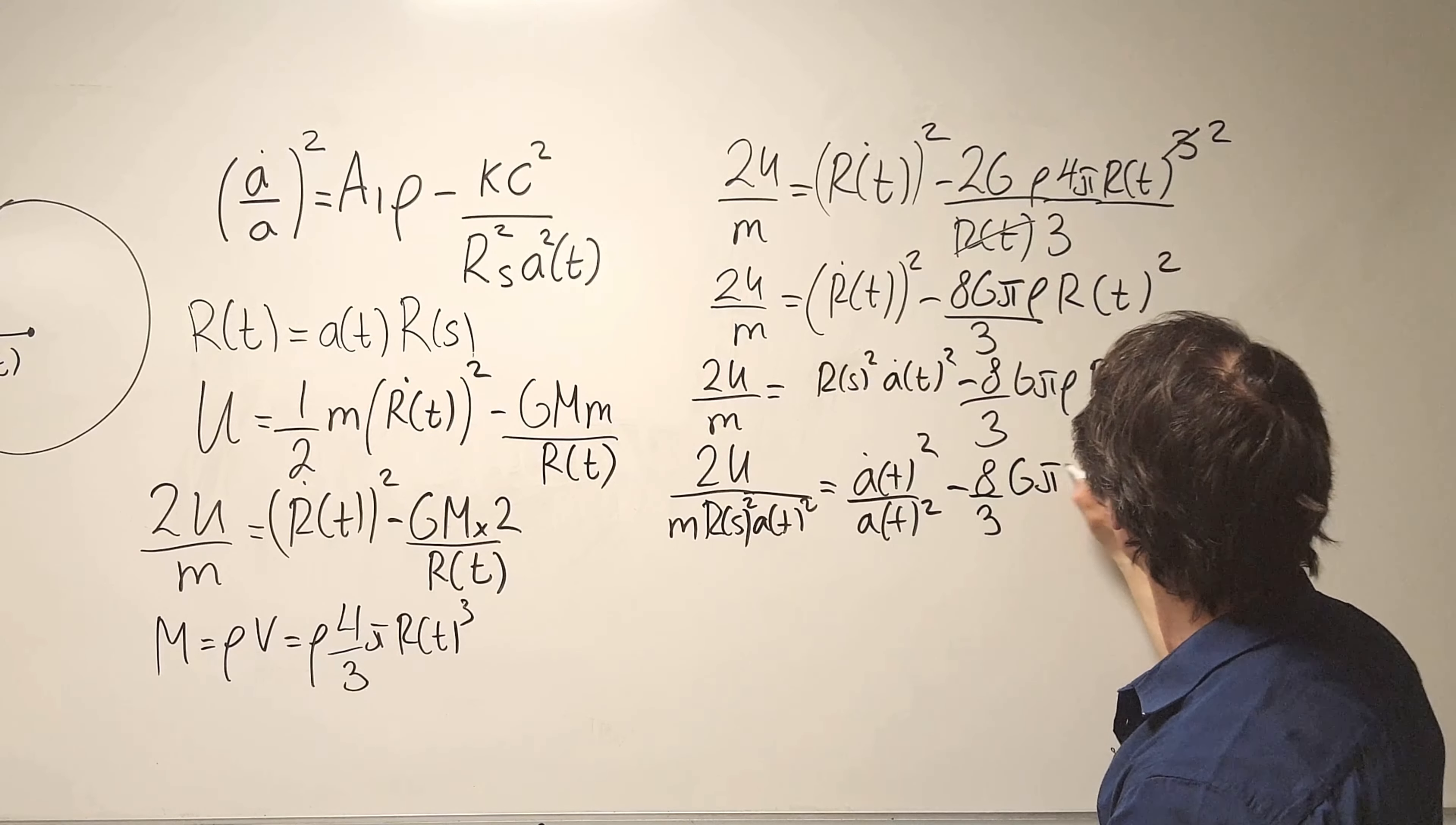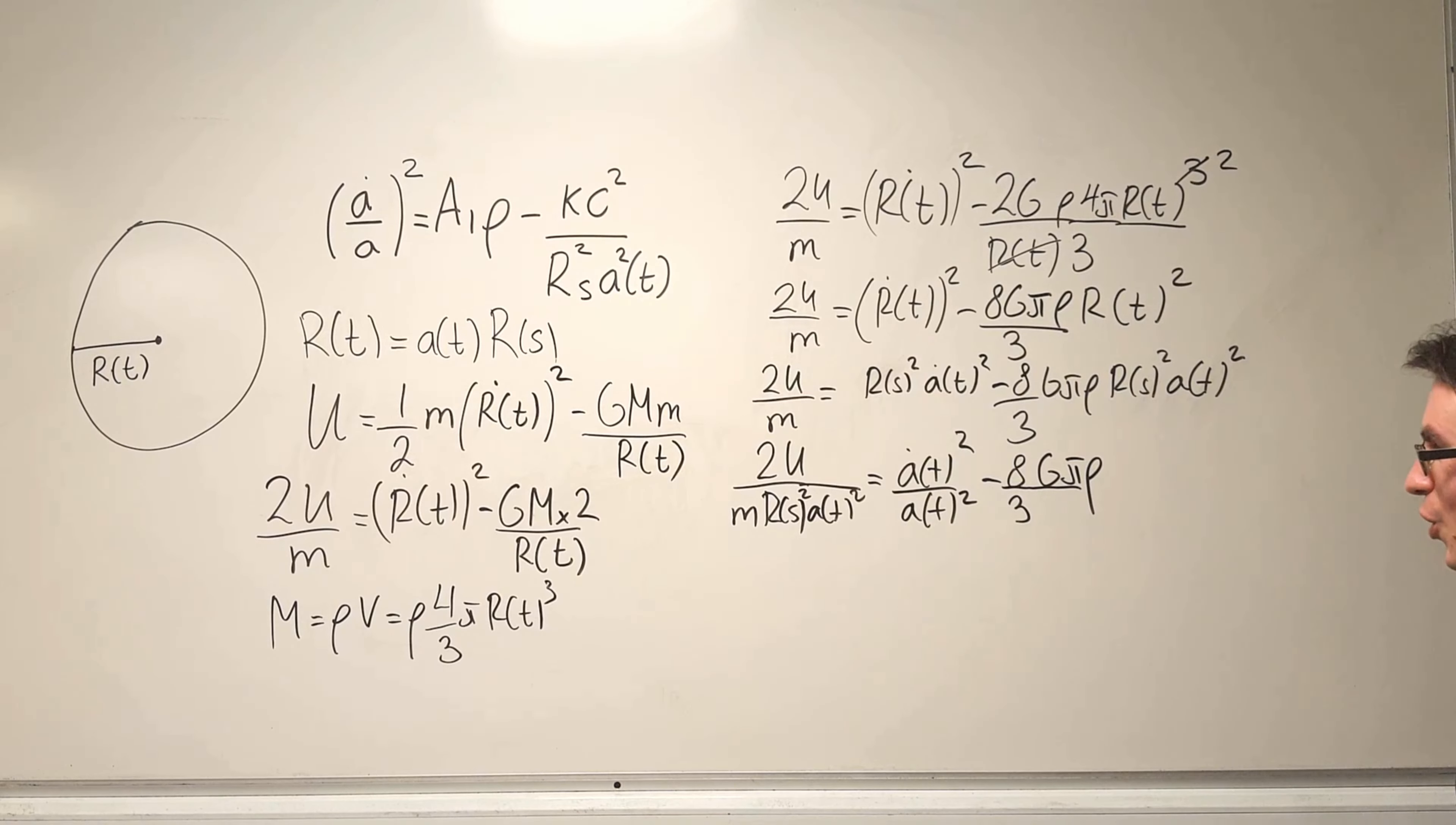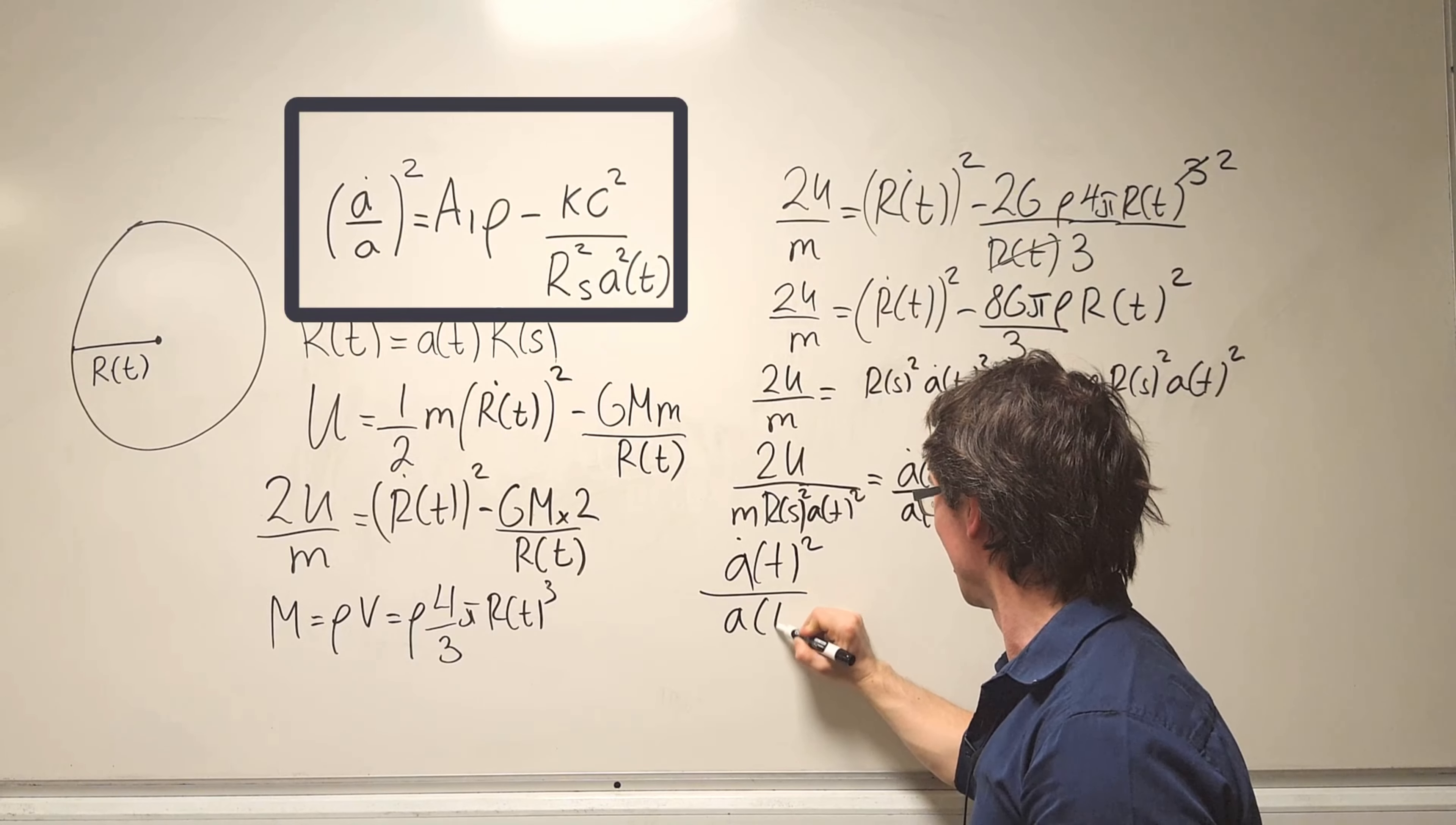Take away 8 over 3 G pi rho, and that's it. Perfect. So now what I'm going to do is simply rearrange it into this format and what I'm going to get is that A dot as a function of t.